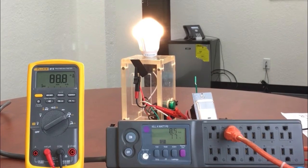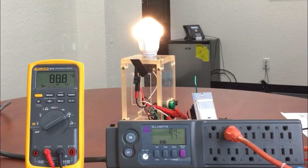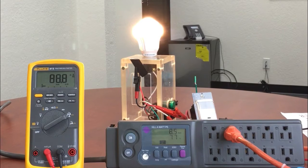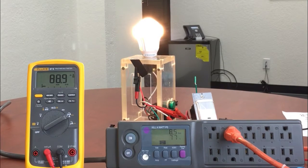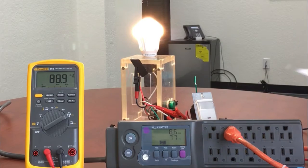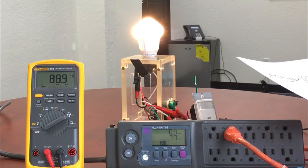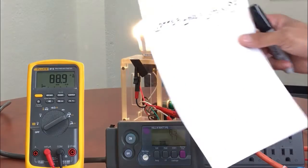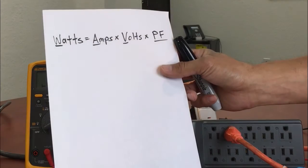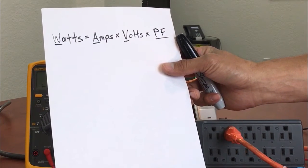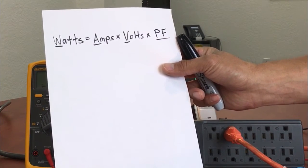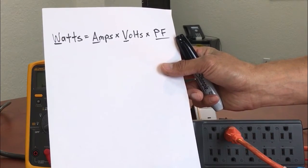Now let's put all the numbers together and calculate the amount of energy being used. Let's start first with a formula that will give us wattage when measuring AC, and that formula is watts equals amps times volts times power factor.